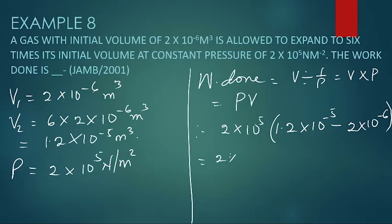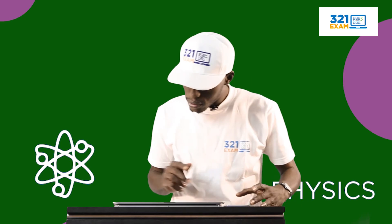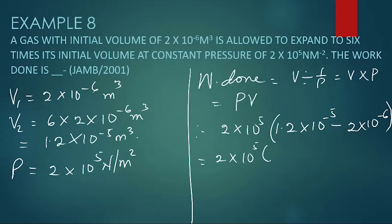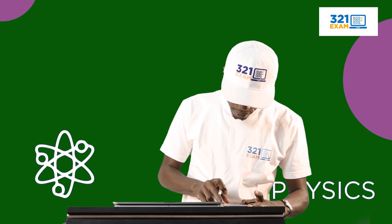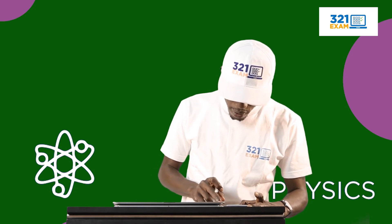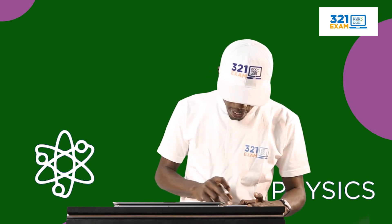And that gives you 2 times 10 raised to the power of 5 multiplied by 1.2 exponent minus 5 minus 2 exponent minus 6.